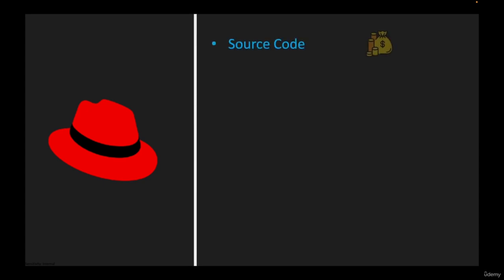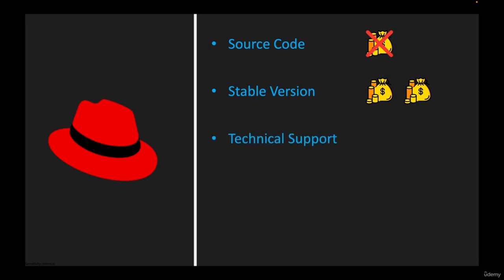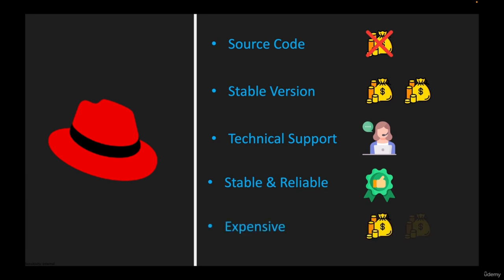Let me start with Red Hat. Red Hat Enterprise Linux is a serious Linux for businesses. The Red Hat source code is free, so you can go and install it. However, if you want to use the Red Hat Linux distribution from Red Hat Incorporated, you have to pay for it — because when you get Red Hat, you also get technical support from Red Hat Incorporated. Many businesses choose Red Hat because it's a very stable and reliable platform, but the problem is that Red Hat is expensive.